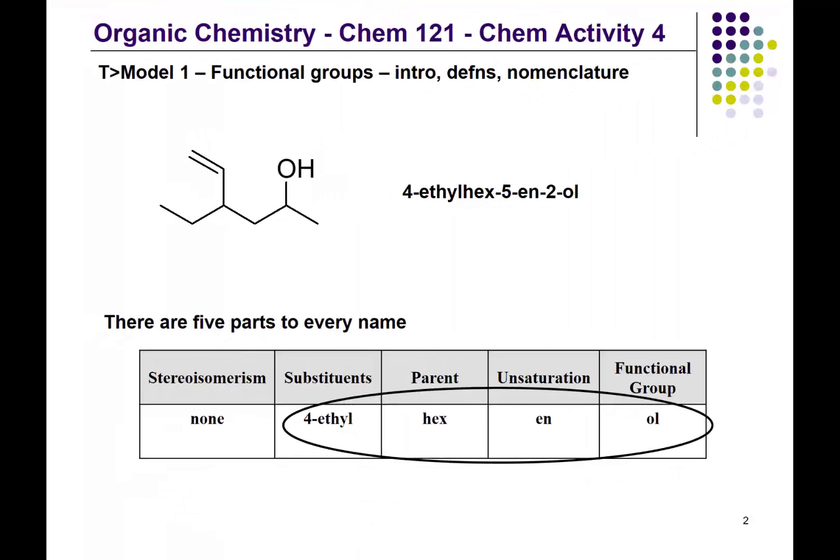In this video we'll be looking at the concept of functional groups. Functional groups are a specific arrangement of atoms in a definite bonding pattern. In the organic compound in front of you, you can see that it has the OH bonding pattern, and this is the alcohol functional group.